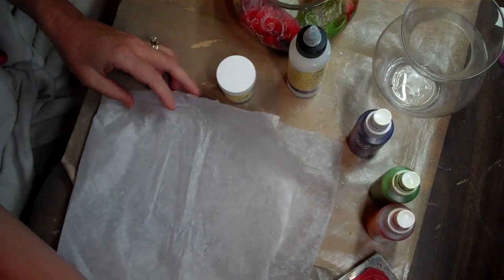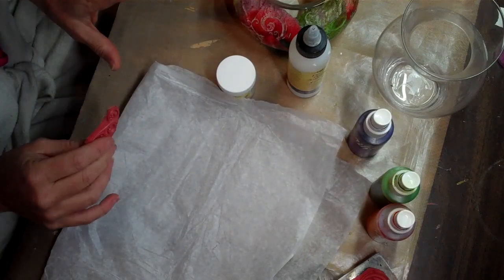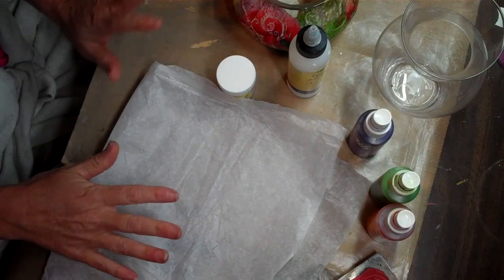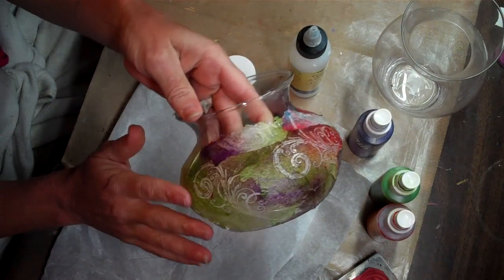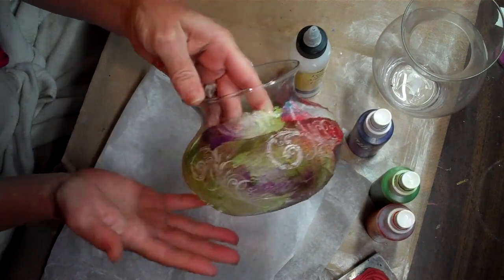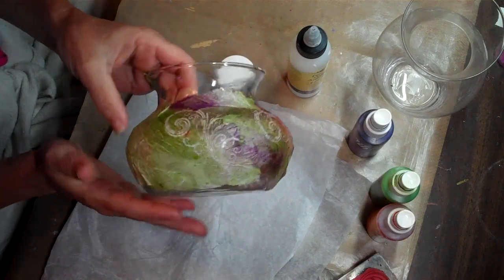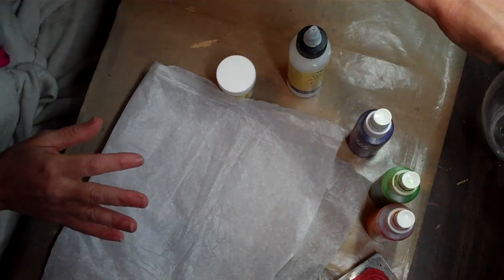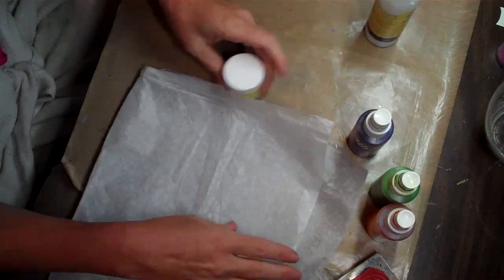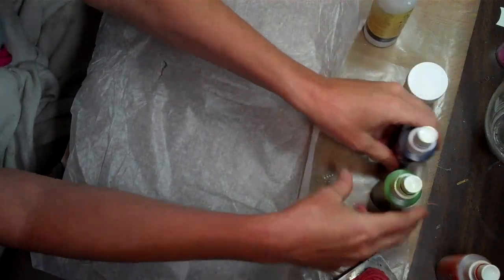First thing you're going to need is to have a piece of tissue. This technique can actually work on cardstock also, but I'm going to do it on tissue because I'm actually going to rip the tissue and put it on a piece of glass and make this really cool vase or it could even be a votive candle or whatever your imagination comes up with. So, grab your tissue paper or cardstock, whatever you're using.